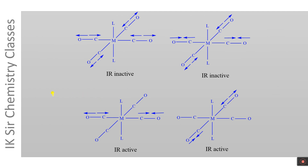Now let us see for the trans isomer, where the two L groups are opposite to each other. In the first mode of vibration, this C–O bond is stretched and this C–O bond is also stretched, and these other two bonds are also stretched. Similarly, in the second mode of vibration, these bonds are stretched but the other two bonds are compressed. Both of these modes of vibration are IR inactive because they do not lead to a change in the dipole moment of the metal carbonyl.